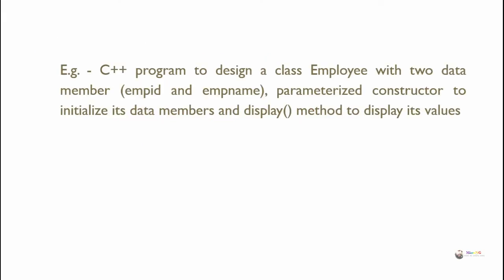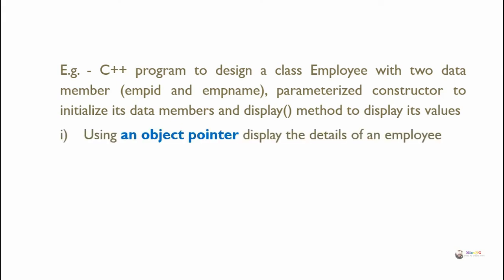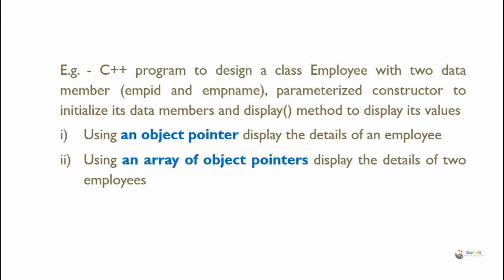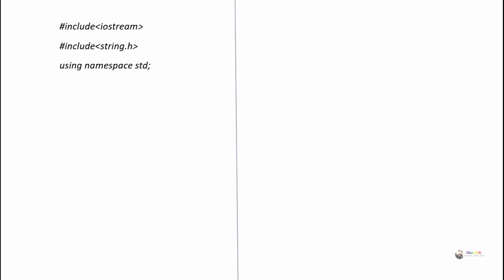Example: C++ program to design a class employee with two data members, emp_id and emp_name. Include a parameterized constructor to initialize its data members and a display method to display their values. In the first case, use an object pointer to display the details of an employee. In the second case, use an array of object pointers to display the details of two employees.